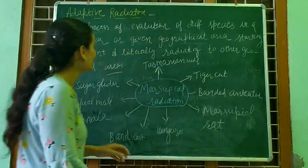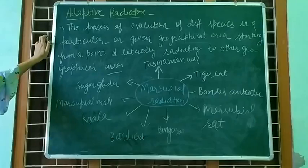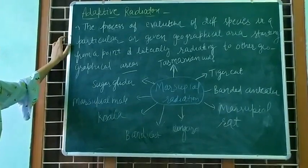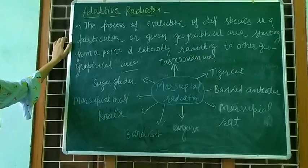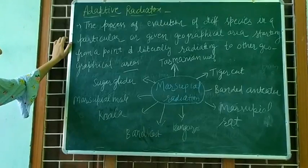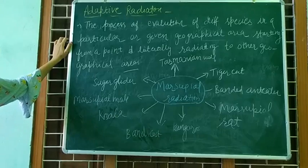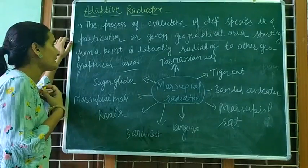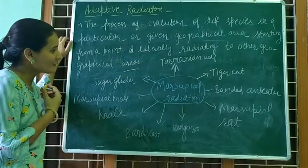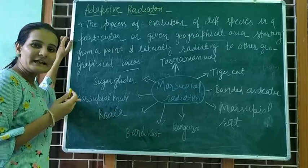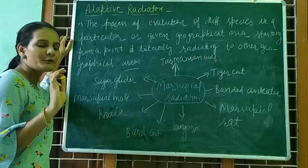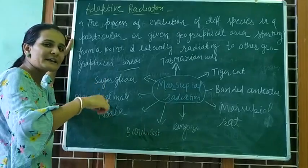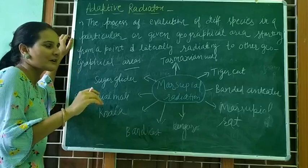Adaptive Radiation. What is the process of evolution of different species in a particular geographical area, habitat or place? What is the process of radiating in different types of geographical area? Starting from a point and literally radiating to other geographical areas — this is the concept we are exploring.